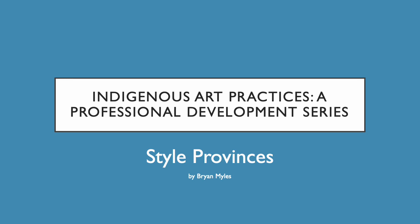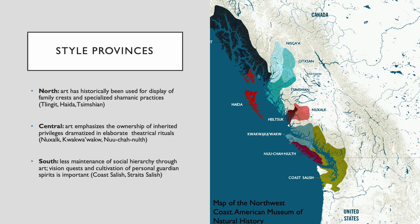Welcome to this introduction to the various styles and provinces of Northwest Coast art. The Northwest Coast is commonly described in terms of three subareas or style provinces — areas defined by stylistic similarities of the art, but also by similar ceremonial and spiritual context. Before continuing, it's worth noting that using categories like this can be problematic, as art is influenced by localized practices and fluid movement of ideas and styles all along the coast.